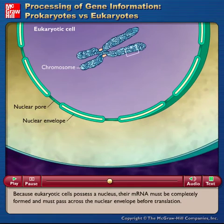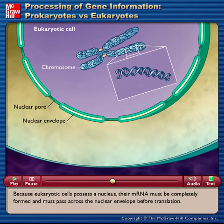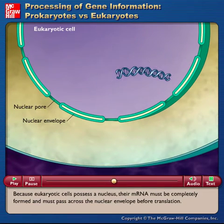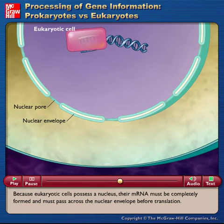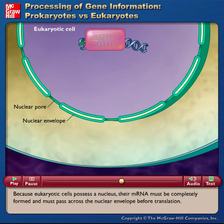Because eukaryotic cells possess a nucleus, their mRNA must be completely formed and must pass across the nuclear envelope before translation.